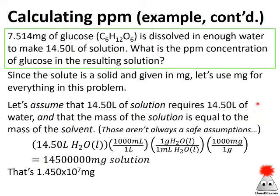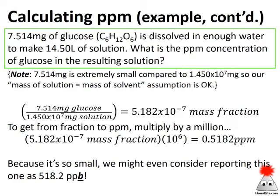Always state your assumptions explicitly and make sure to check that those assumptions are good. Starting with our solvent — 14.5 liters of liquid water — I'll convert liters to milliliters, and since water has a density of 1 gram per milliliter, then convert grams to milligrams. This gives me 1.450 × 10⁷ milligrams. Checking our assumptions: 7.5 milligrams compared to 1.45 × 10⁷ milligrams is extremely small, so the assumptions we're working with are okay in this case.